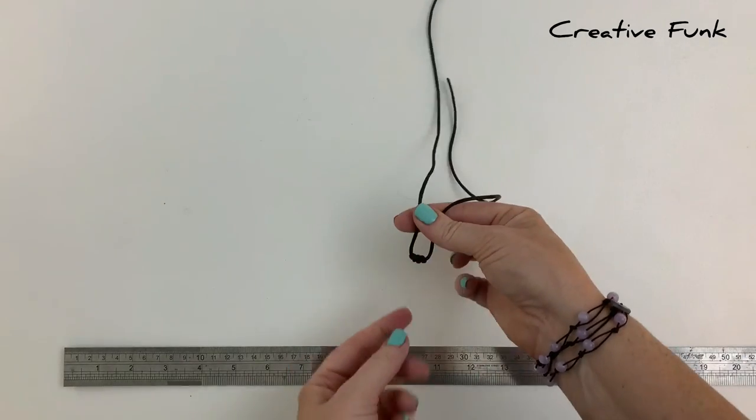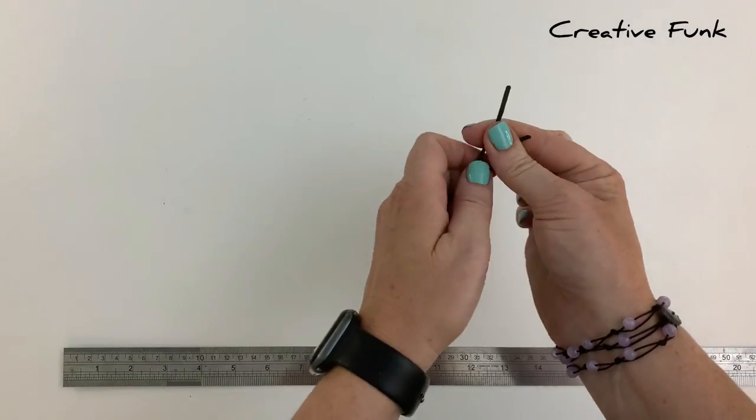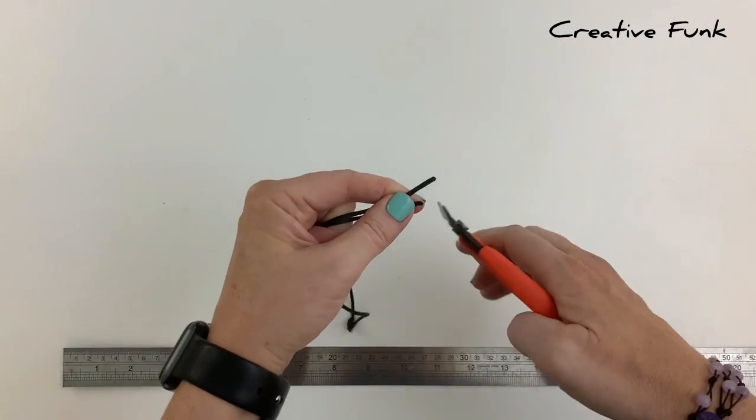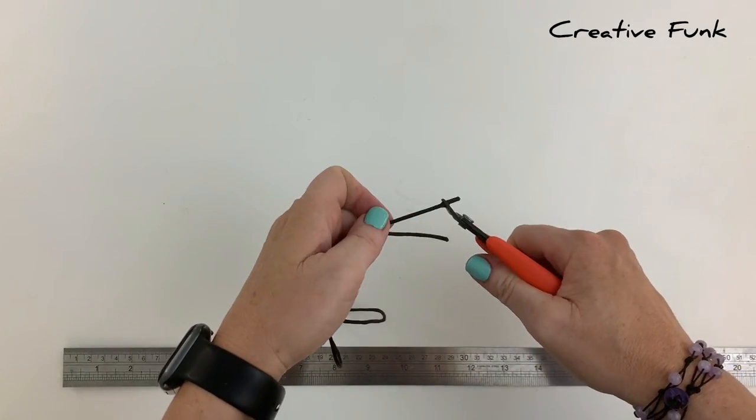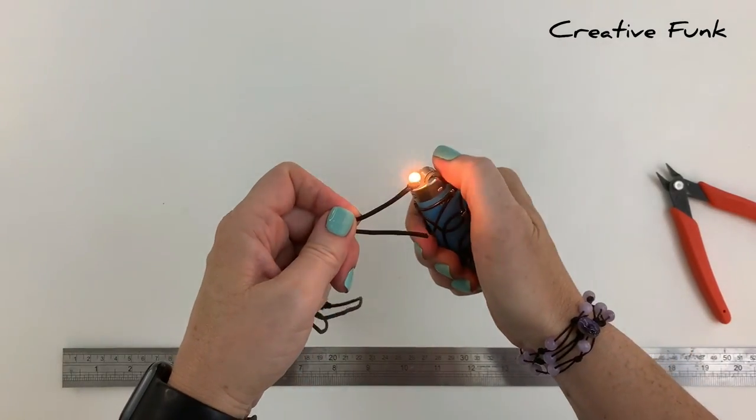And following the cords to the other end. I'll just snip that uneven end off so that we've got a nice even cord to start our sliding knot bracelet with.